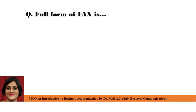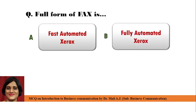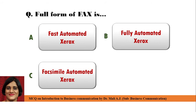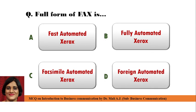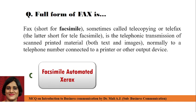Next question: Full form of FAX is — Point A: Fast Automated Xerox, Point B: Fully Automated Xerox, Point C: Facsimile Automated Xerox, Point D: Foreign Automated Xerox. Correct answer is Point C: Facsimile Automated Xerox. Because FAX is short for facsimile, sometimes called telephoning, telecopying, or telefax. The letter is short for telefax. A facsimile is the telephonic transmission of scanned printed material, both text and images, normally to a telephone number connected to a printer or other output device.